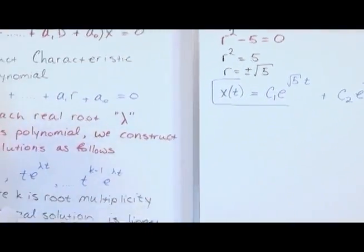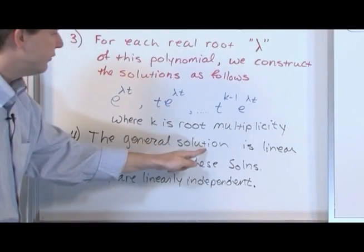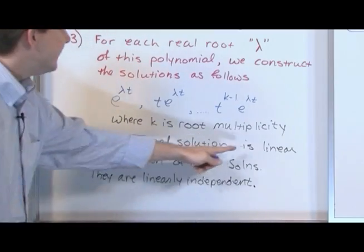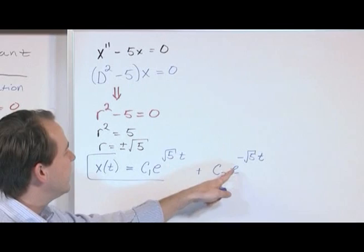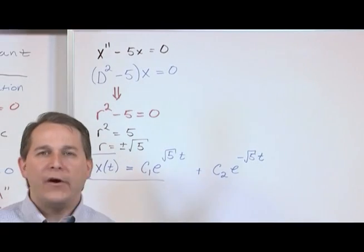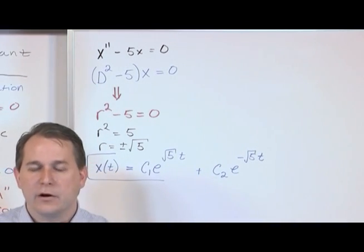That's what we're doing when we say at the bottom the general solution, which is the whole solution, is the linear combination. When I say linear combination, this is what we're doing: adding them together with constants out in front. Of course, the constants aren't defined. We don't know what the constants are.